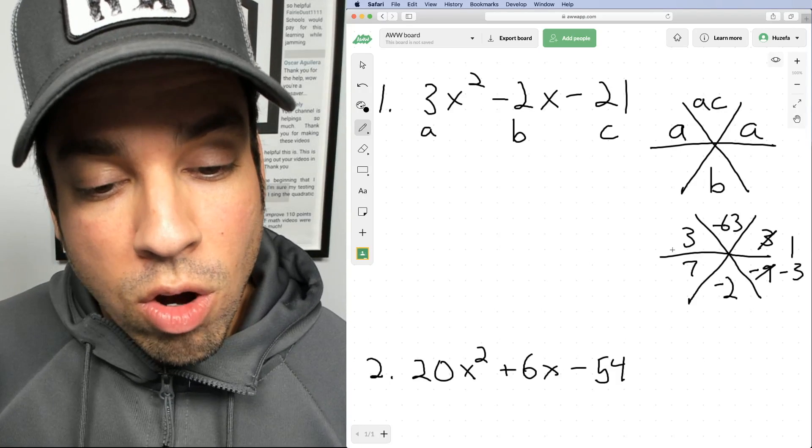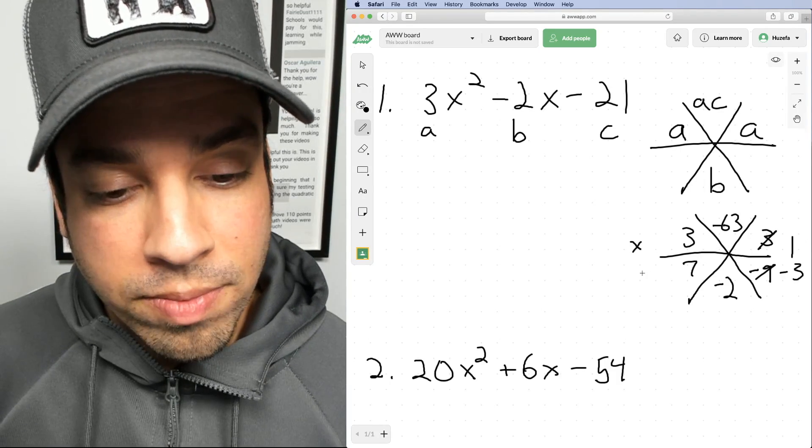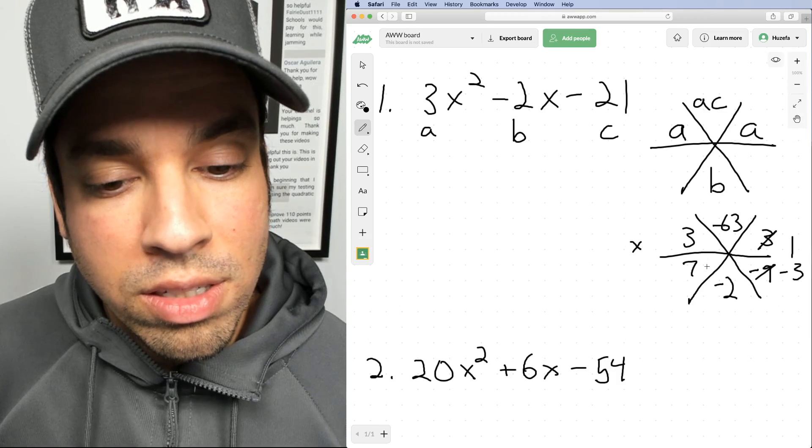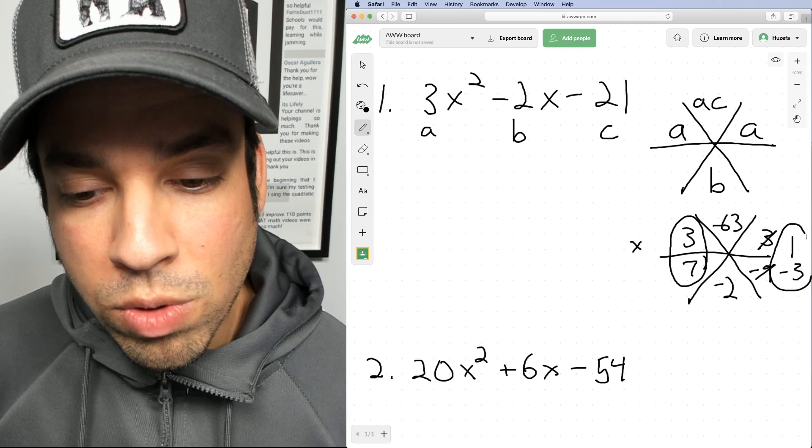Now we're almost there. All we got to remember now is the top row here is our X's and the bottom row here is our constants. And this is a pair, and this is a pair.